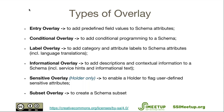The label overlay is used to add category and attribute labels to schema attributes — a good example is language translations. The informational overlay is used to add descriptions and contextual information to a schema, such as service hints or informational text. For example, an international company with offices in the US and the Philippines could use an informational overlay to change the legal prose attached to the schema.